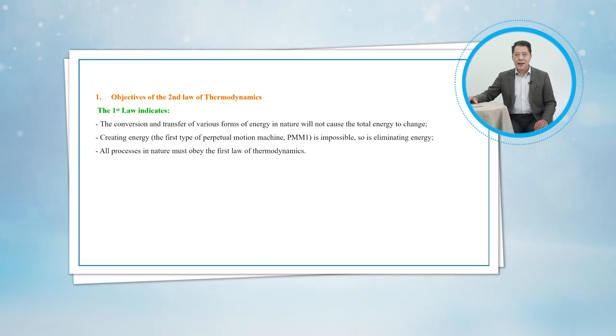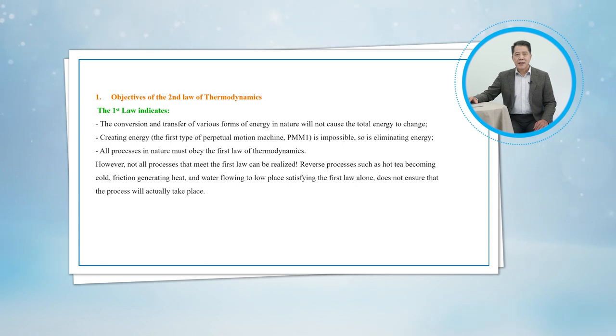A device that violates the first law of thermodynamics is called a perpetual motion machine of the first kind. A device that violates the second law is called a perpetual motion machine of the second kind. Reverse processes such as hot coffee becoming cold, friction generating heat, or water flowing to low places satisfy the first law, but satisfying the first law alone does not ensure that the process will actually take place.